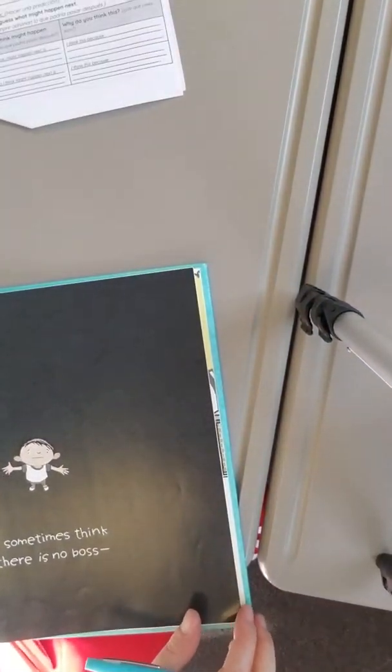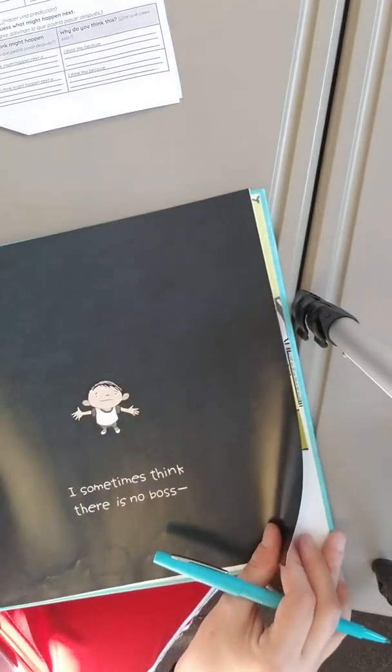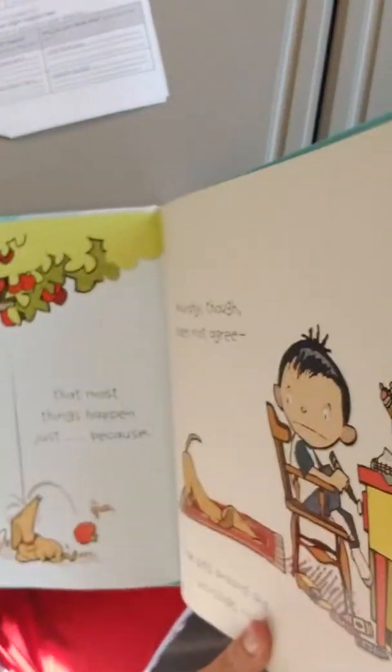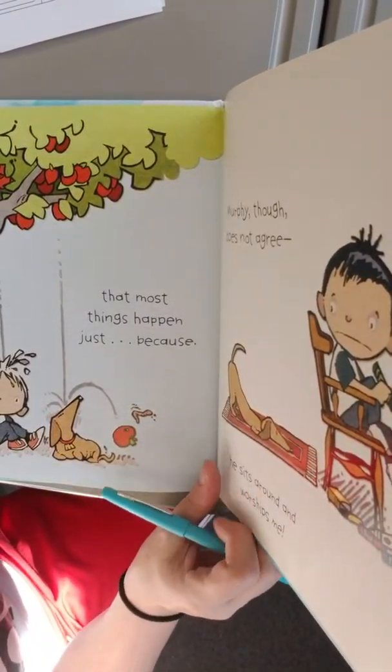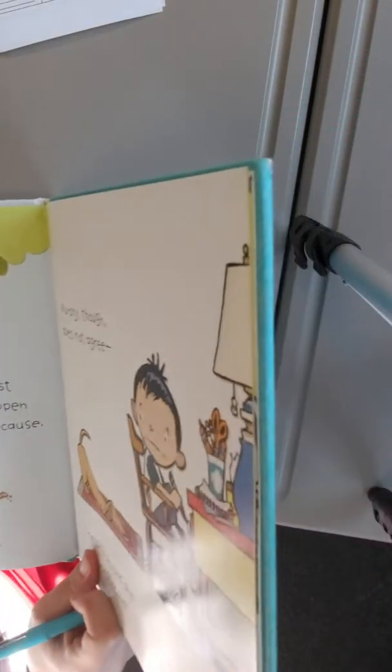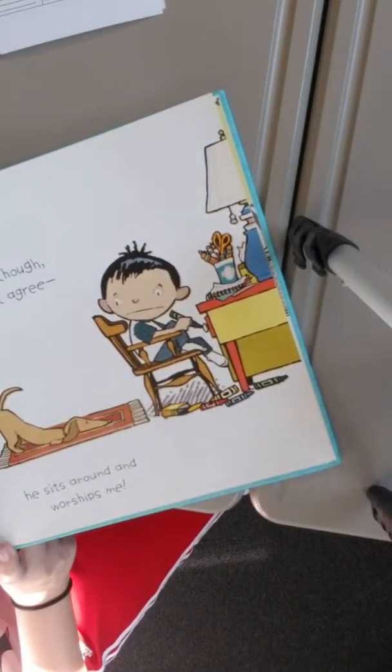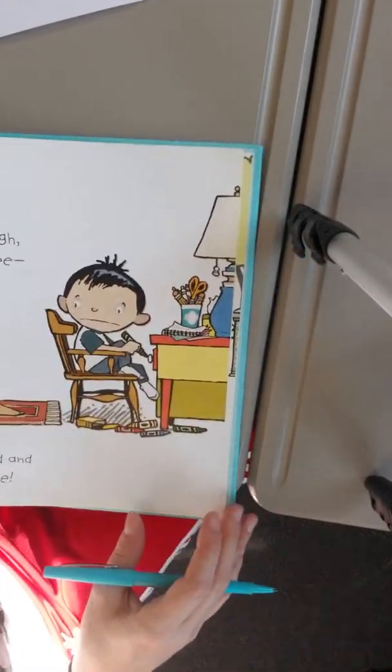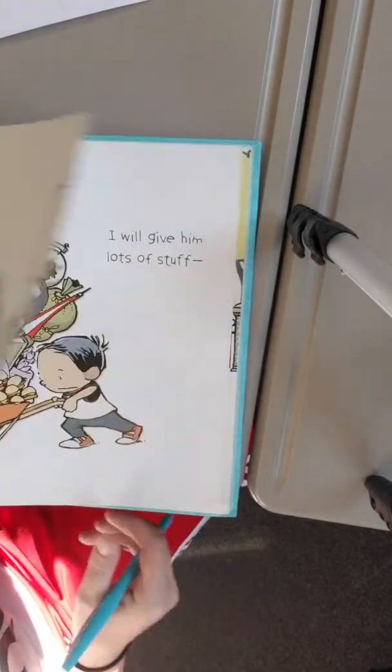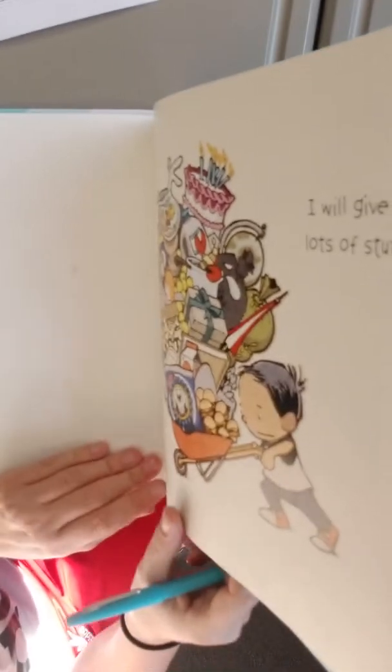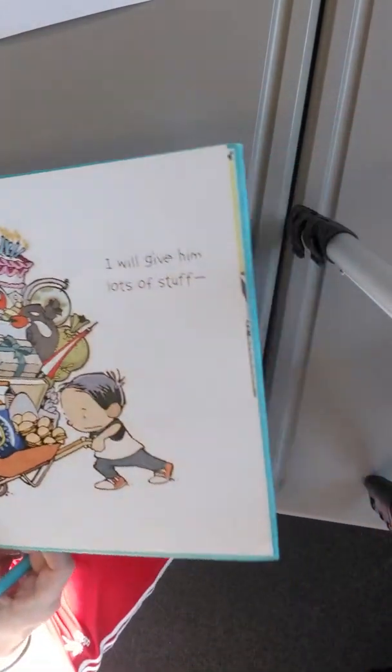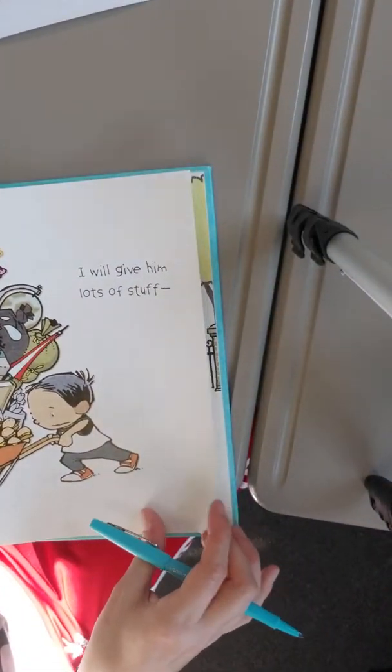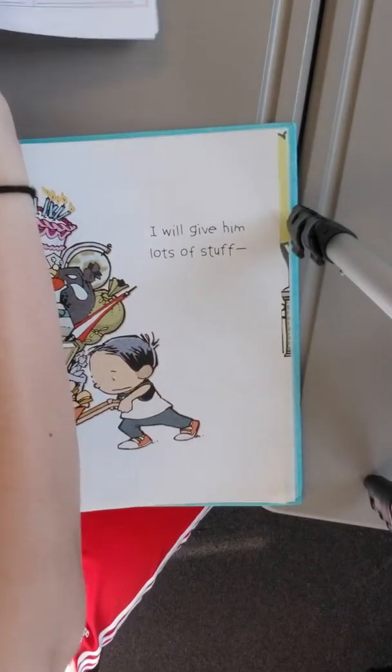I sometimes think there is no boss, that most things happen just because. Murphy though does not agree. He sits around and worships me. He thinks that if he begs enough, I will give him lots of stuff. So let's make a prediction here.